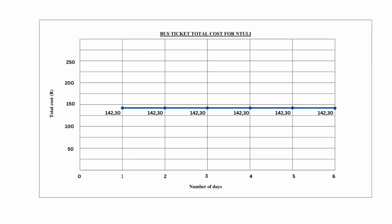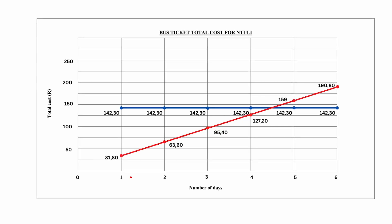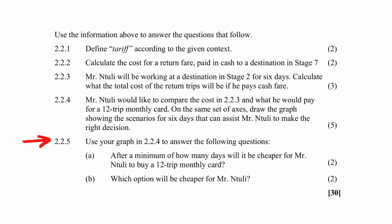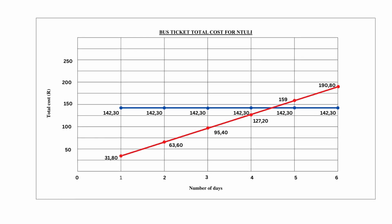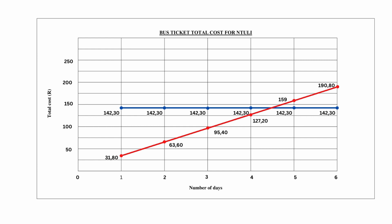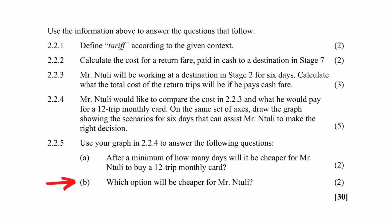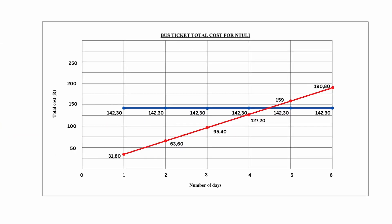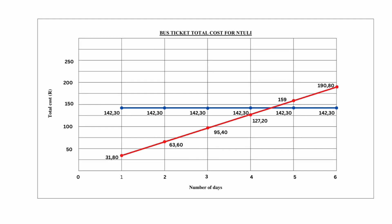The cash fare graph starts at day 1 and is not drawn to the y-axis. For question 2.2.5a, using the graph from question 2.2.4, after four days the 12-trip monthly fare will be cheaper. For question 2.2.5b, you have to identify the cheaper option for a six-day working week — the cheaper option will be the 12-trip monthly fee.